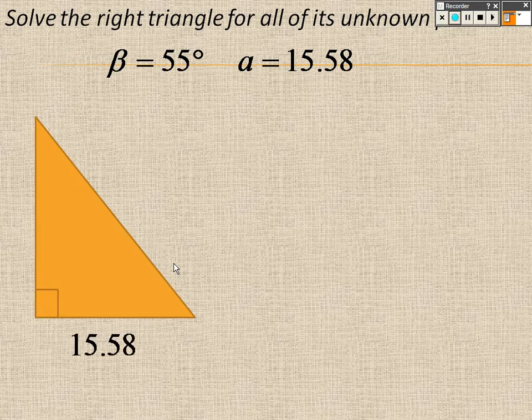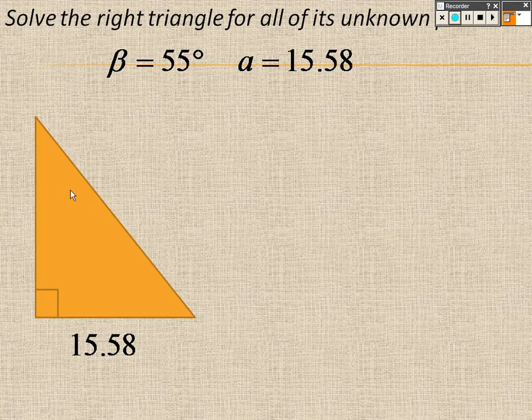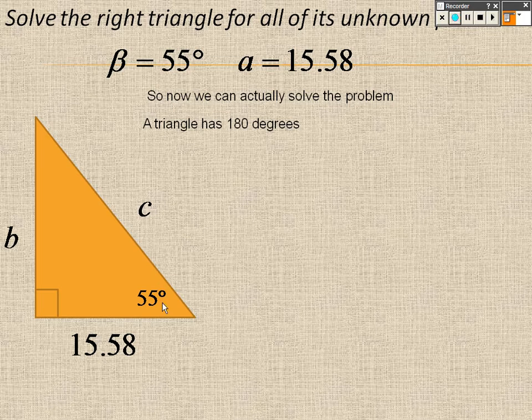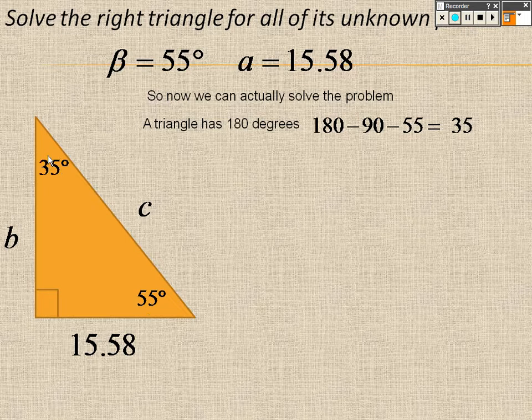So I'm going to solve this for all the missing parts. 15.58 is a, don't know angle α. Beta is 55 degrees, don't know b and c. But I can find α because the triangle is 180 degrees, so I do 180 minus 90 minus 55, so I know that that's 35 degrees now.